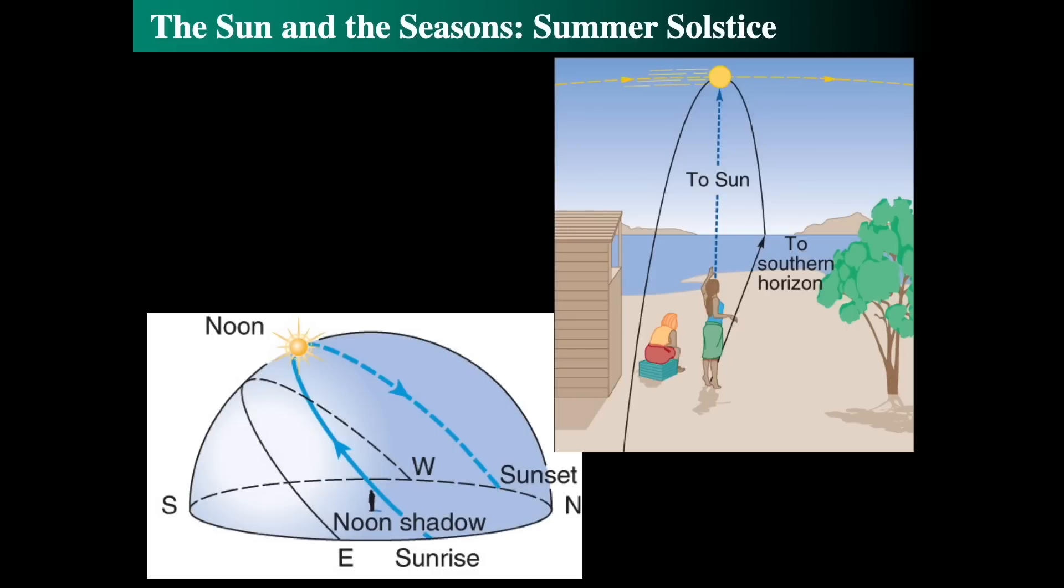When we look at the sun on the summer solstice, the sun appears to be very high in the sky. It casts very short shadows. The earth is warm, the sun is warm, and it rises very far north of east, and it sets north of west. And when it's at noon, it is high in the sky.